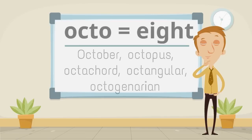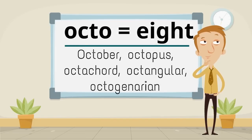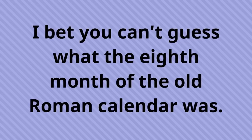Octo, meaning eight, makes the words October, octopus, octochord, octangular, and octogenarian. I bet you can't guess what the eighth month of the old Roman calendar was.